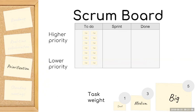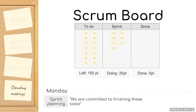With points assigned to tasks, we can estimate how many points we have in a project. Here you can see a project with a weight of 155 points and nothing done yet. On Monday, we have what we call a sprint planning meeting. This normally takes somewhere between 30 and 45 minutes where we're evaluating all the to-dos, prioritizing them, and identifying those we're committed to finishing by the end of the sprint. In this case, I've taken 20 points worth, which happen to be five tasks — some small ones and some big ones.